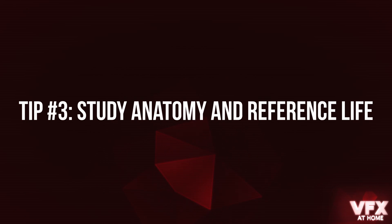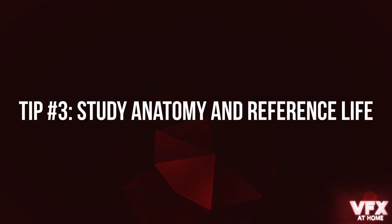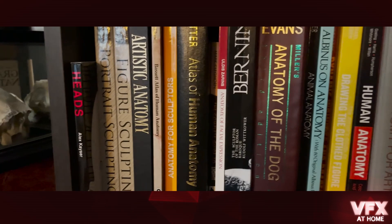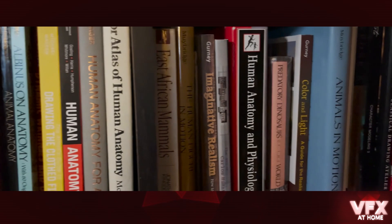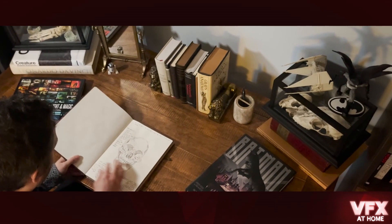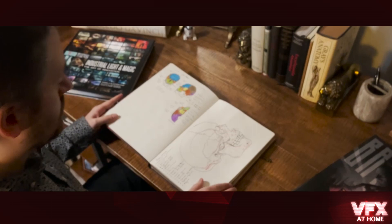Tip number three: study anatomy and reference life where possible. Foundational anatomy is important to making successful representational organic sculptures. I would recommend always looking directly at reference of the source subject and ideally not another artist's depiction — you want to be interpreting with your own eyes. Beyond that, the best thing you can do for yourself, if you haven't already, is to study the human skull.